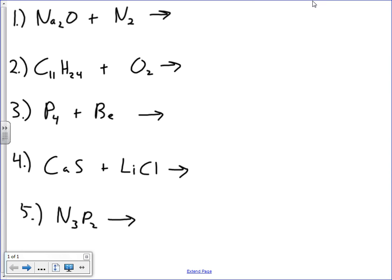All right, let's have a look at the first one here. First step in being able to predict the products of a reaction is to figure out what kind of reaction it is. I've got an ionic compound, sodium oxide, reacting with nitrogen gas. What kind of reaction is that?